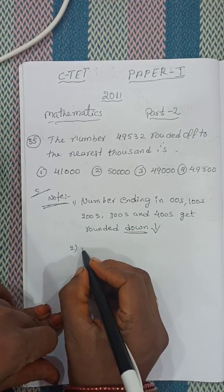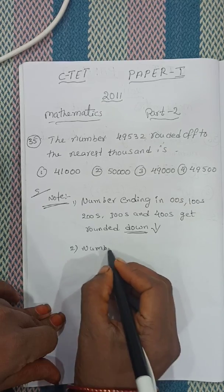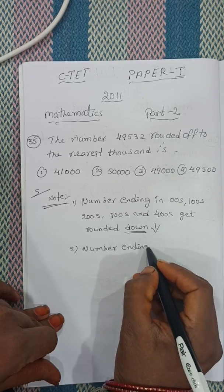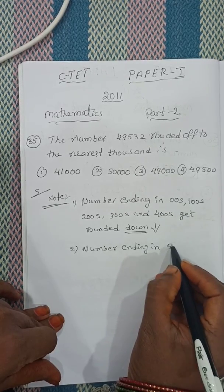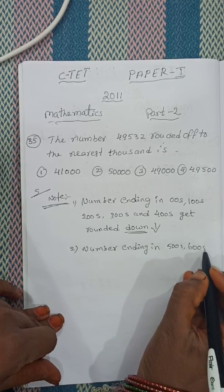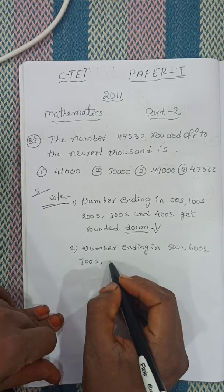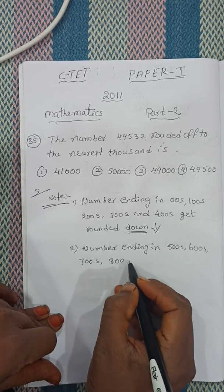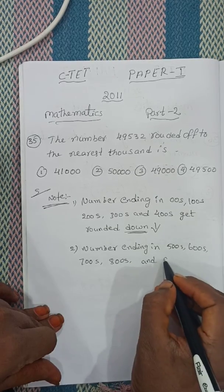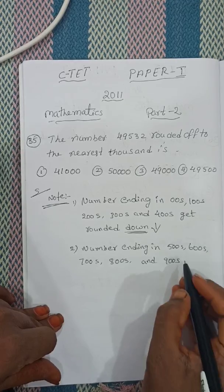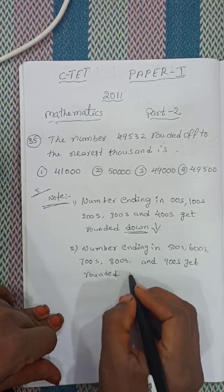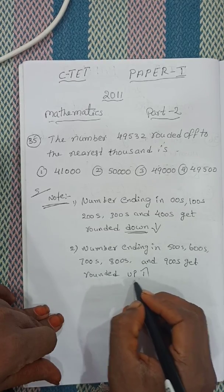Second note: Numbers ending in 500, 600, 700, 800, and 900 get rounded up.